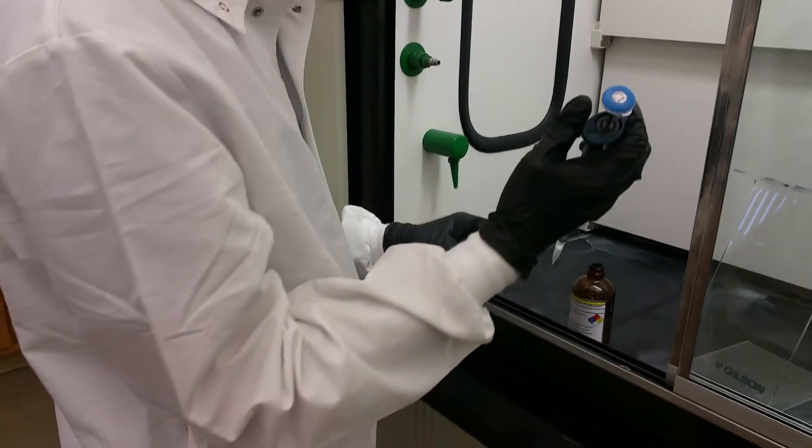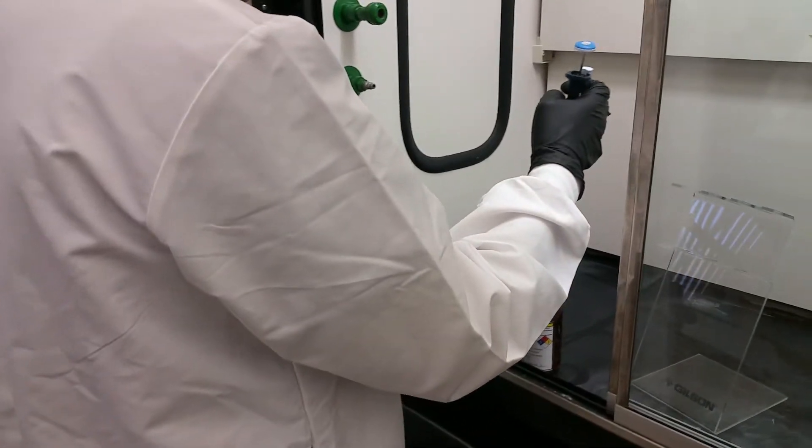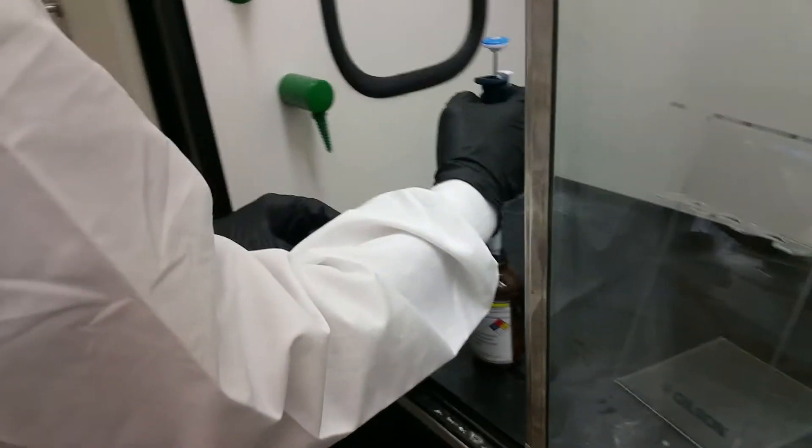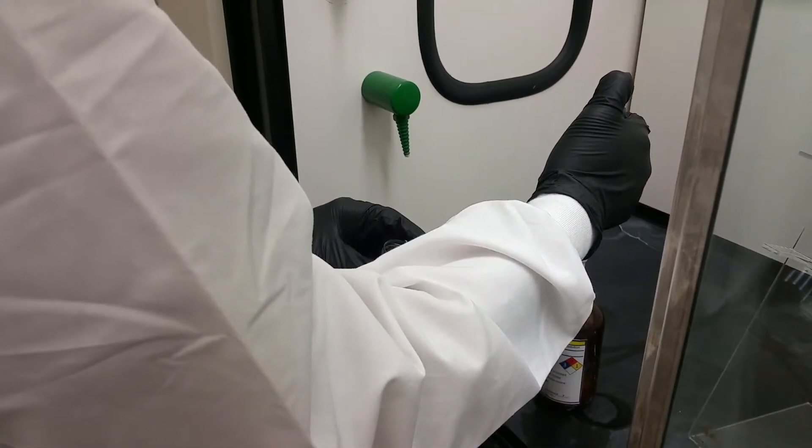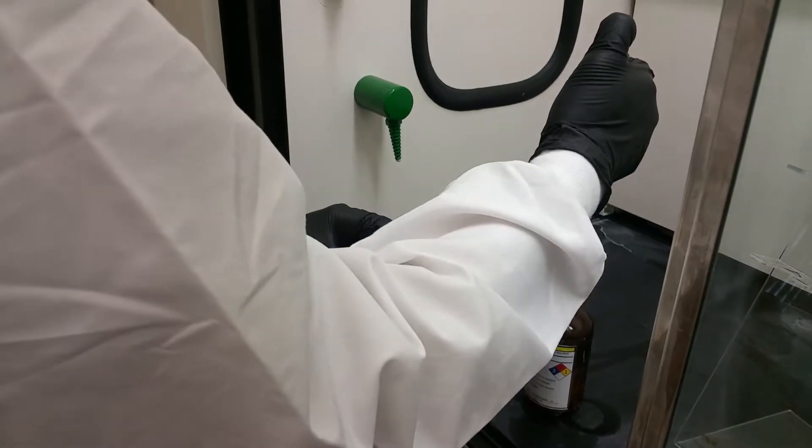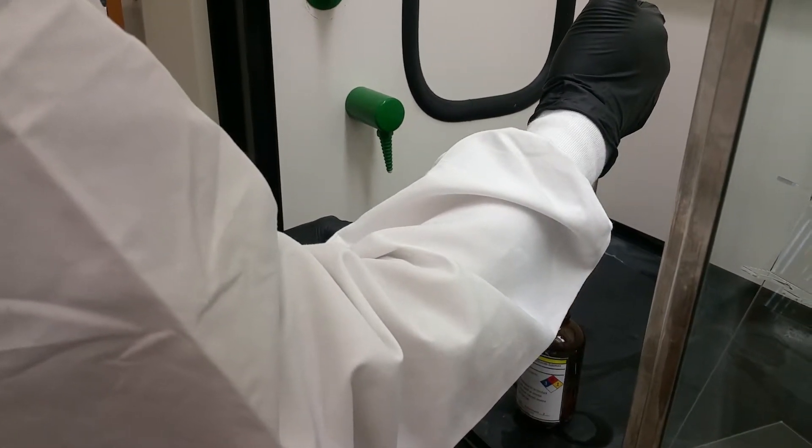Depress the plunger to the first stop, then place the end of the pipette tip into the liquid. Release the plunger, pulling the liquid into the pipette tip.